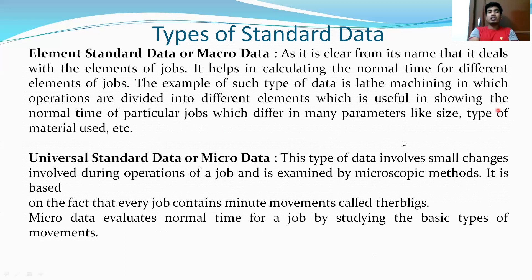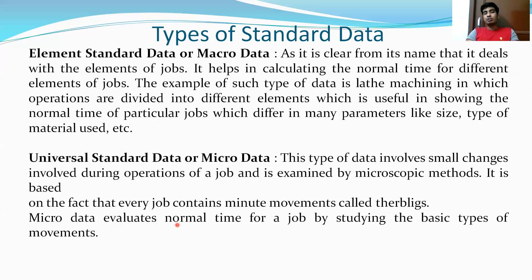The second type involves small changes during operations of a job and is examined by microscopic methods. It is based on the fact that every job contains minute movements — this depends on micro-motion studies. We measure all the small symbols (therbligs) and their definite times, as seen in the CMO chart. Micro-data evaluates normal time for jobs by studying the basic types of movements. We add all the movements together to create a complete operation and calculate standard data from that.